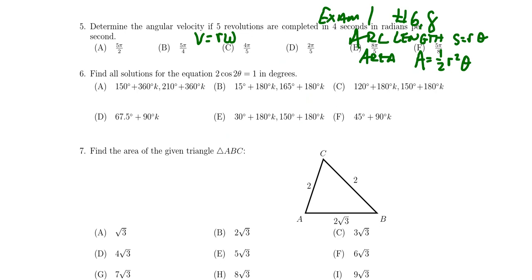Question number six is about solving trigonometric equations. We covered this on exam three, with two questions in the multiple choice section: question seven was a basic trigonometric equation, and question eight involved changed periods like cosine of 2θ. Be prepared to solve a basic linear trigonometric equation where the period may or may not be changed.